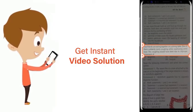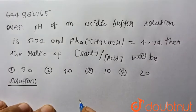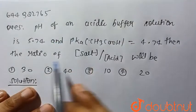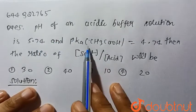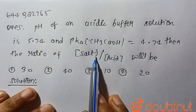Crop the question and get instant video solution. Hello everyone, consider the given question: pH of an acidic buffer solution is 5.74 and pKa of acetic acid is equal to 4.74.